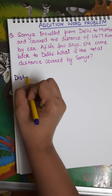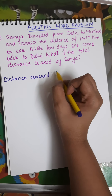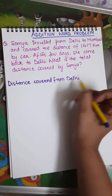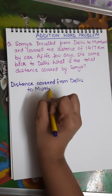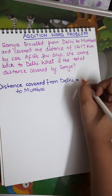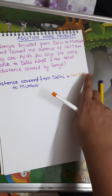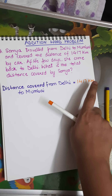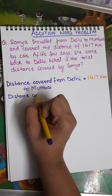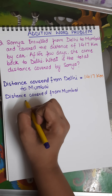So this is how we write the statement for distance. My distance is 1417 — and as I told you earlier, it is important to write whatever measuring unit is given to you in the question. So: distance covered from Delhi to Mumbai is 1417 kilometers. Then she came back also, so again: distance covered from Mumbai to Delhi.